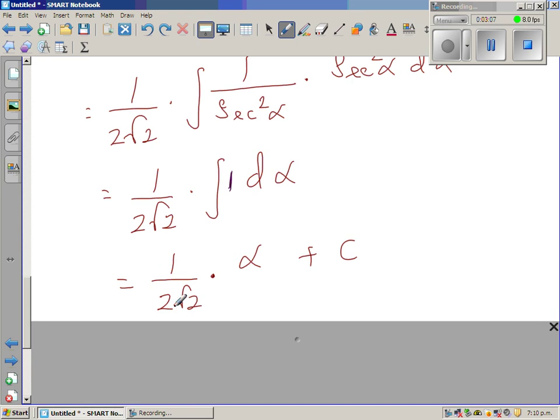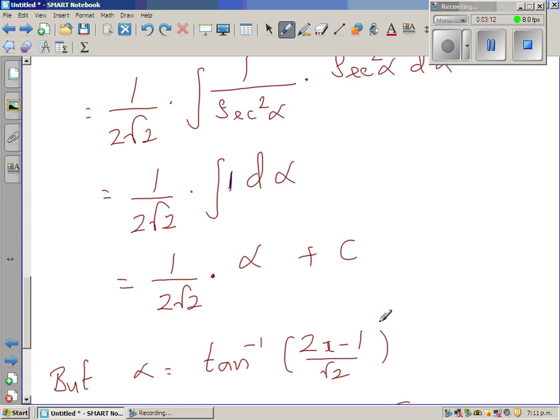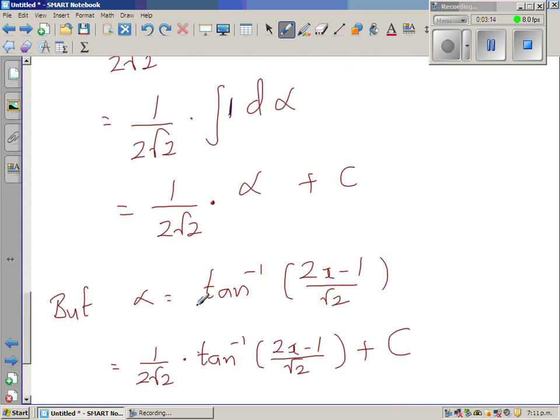That is nothing but 1 over 2 root 2 alpha plus c, the constant of integration. But now we know that alpha is tan inverse of 2x minus 1 over root 2. So this is your final answer.